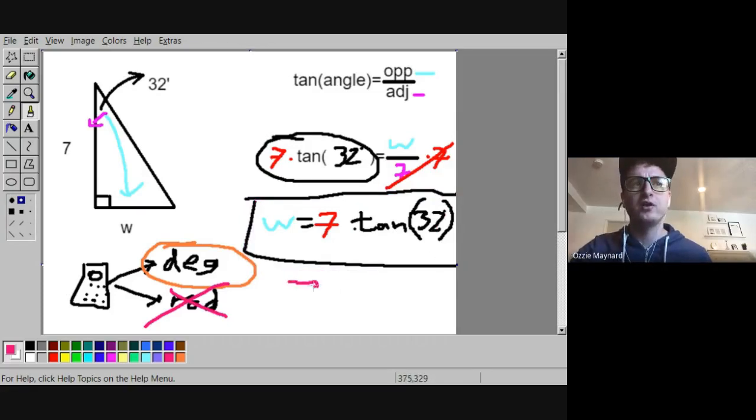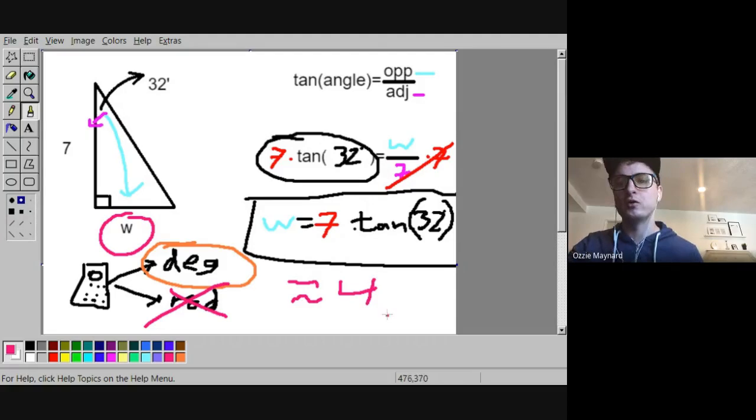But if you wanted to put this in your calculator, it's around, let me just guess, it's around 4. So that would be a reasonable answer. It might be 3. I'm not sure. But if you put it in your calculator, it's going to be around 3 or 4.